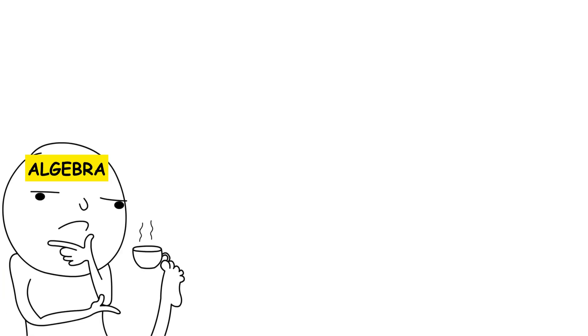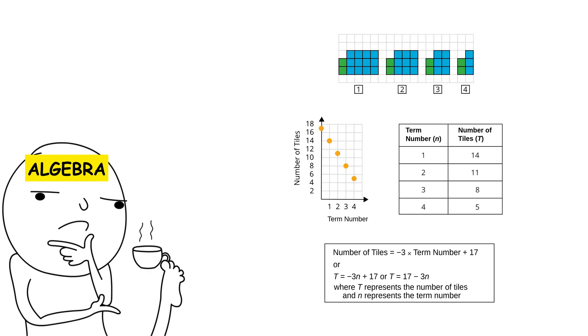Algebra uses symbols to represent numbers, relationships, and structures, enabling the generalization of patterns and the universal solving of problems. Unlike arithmetic, it is not limited to specific values. Instead, it introduces unknowns such as x or y, which can assume different values depending on the context.